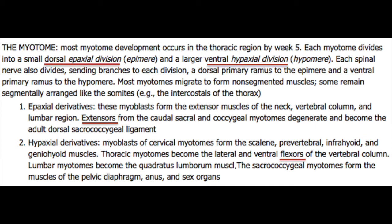Another important division is that the extensor muscles tend to be from dorsal development, and the flexor muscles tend to be from more ventral development. However, it's a rotation of the limbs that puts them on opposite sides in the adult form. Therefore, it's important to remember that the upper limb is essentially the same as a lower limb, except they're at 180 degrees of rotational difference.